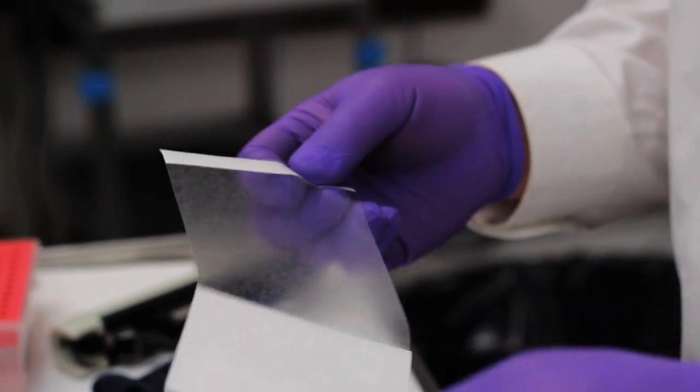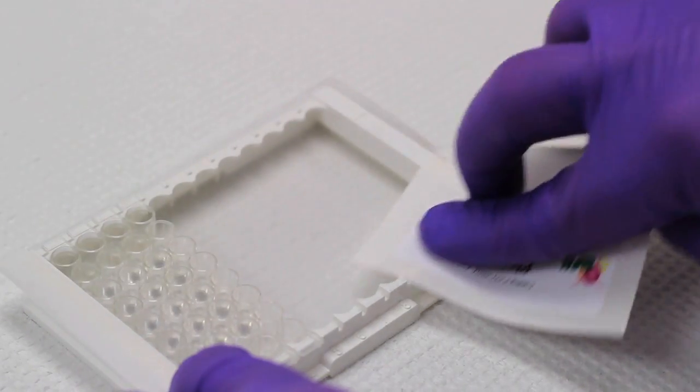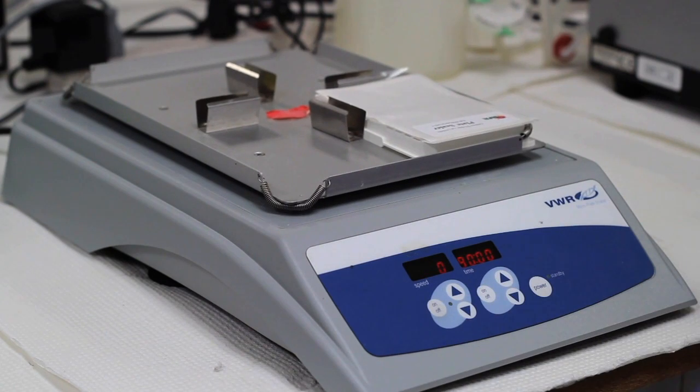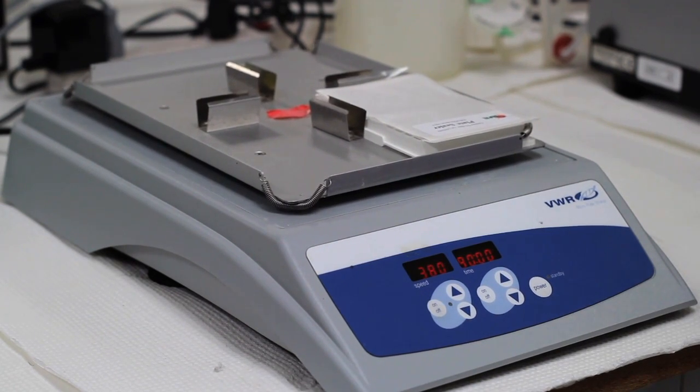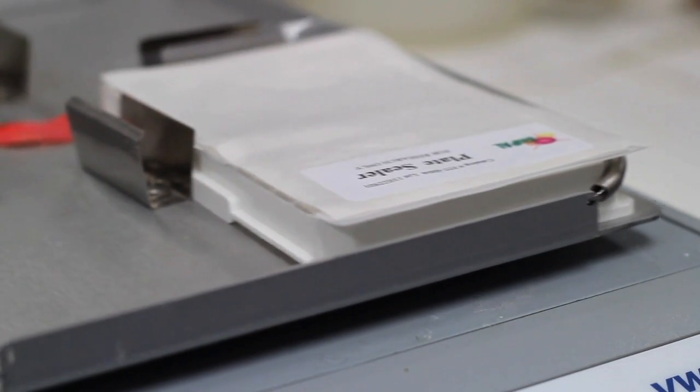Once all wells are filled, use a plate sealer to cover the plate and carefully rub it to make sure it adheres. Then place the covered plate on an orbital shaker at a speed of 500 and allow the plate to incubate for one hour. These parameters may vary based upon your equipment.